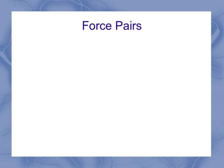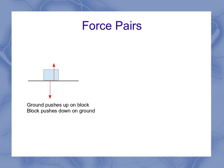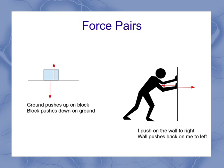Now, from Newton's third law, we know that forces come in pairs. So let's understand that in terms of a normal force. The ground pushes up on the block with a normal force, but the block also pushes down on the ground. If I push on the wall to the right, the wall pushes back on me to the left.